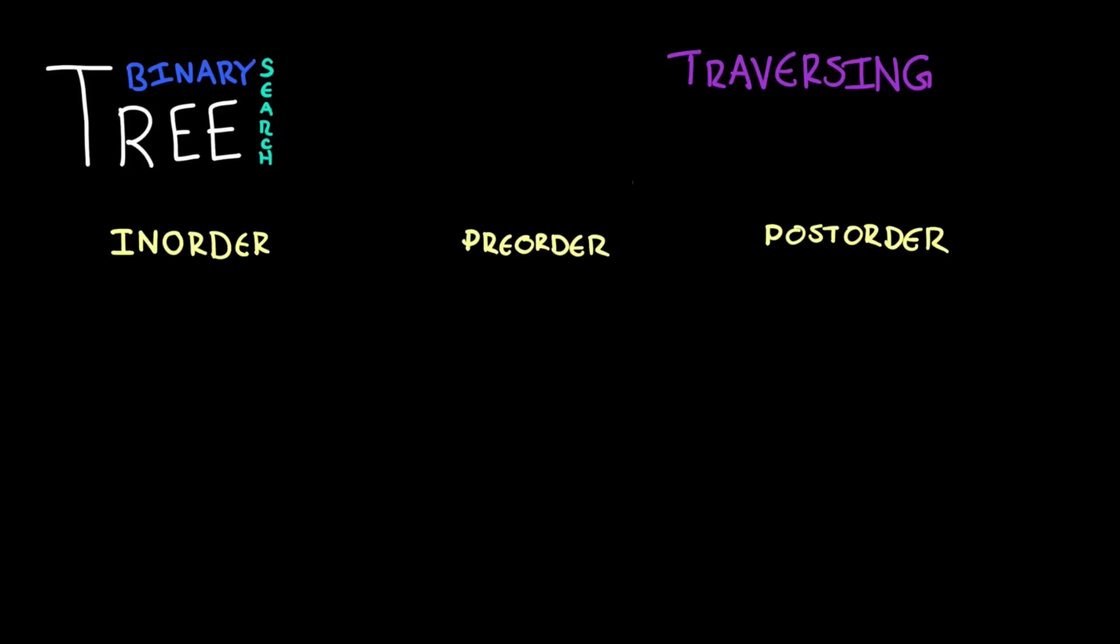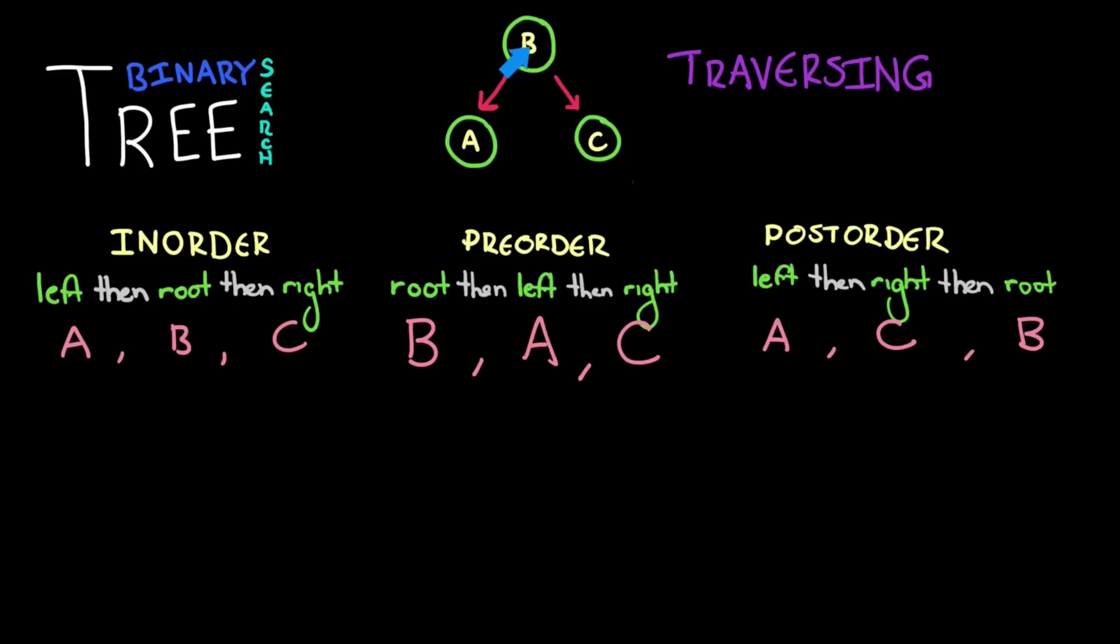A pre-order traversal means that you visit the root first and then you visit its left nodes and its right nodes. In an in-order traversal you visit the left nodes first, then the current node, and then you go to the right nodes. In a post-order traversal the root node comes up last. So you visit the left nodes, then the right nodes, then the current root node.